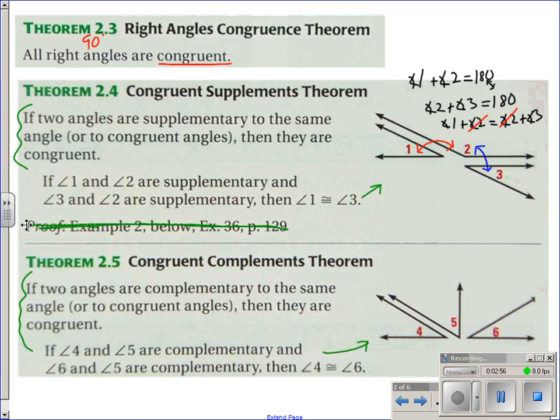And that's what this theorem says. You've got these two angles, angles 1 and 3. They are supplementary to this same angle, angle 2. And so, since they're supplementary to the same angle, they've got to be equal to each other.